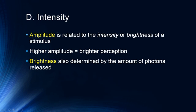Amplitude is related to the intensity or brightness of a stimulus — a higher amplitude means more intense. Brightness is also determined by the number of photons released. For example, a brighter light bulb releases more photons reaching your eye. On a bright sunny day with no clouds, more photons reach your retina, whereas on a cloudy day fewer photons get through. So amplitude is associated with intensity or brightness, whereas wavelength is associated with color or hue.